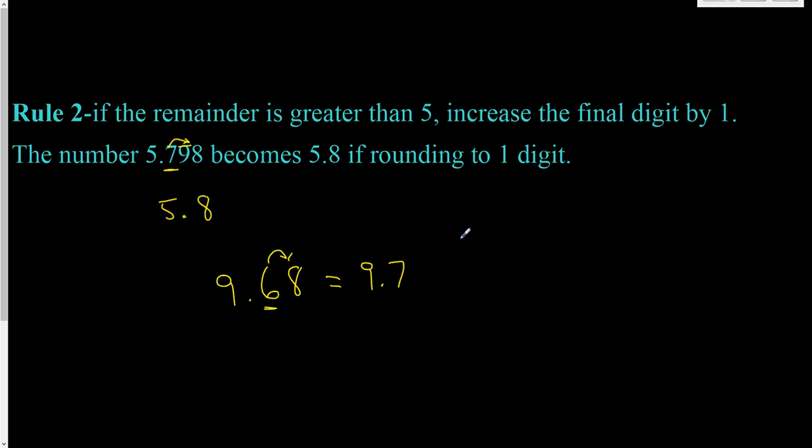Just like in the previous example, we said one, two, three, and four you would leave or not bump it. Six, seven, eight, nine you would bump or increase.